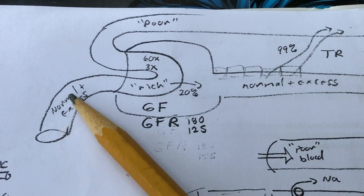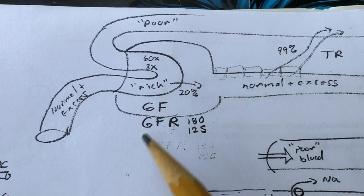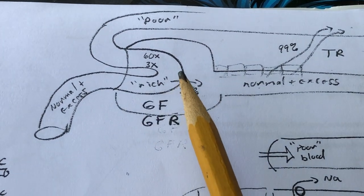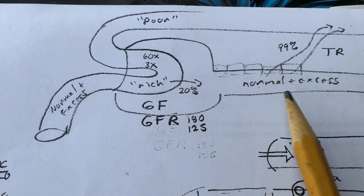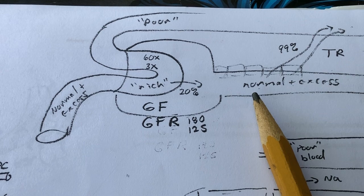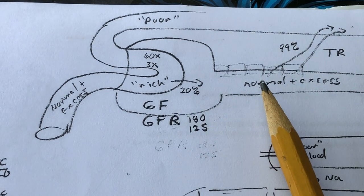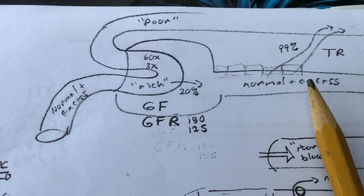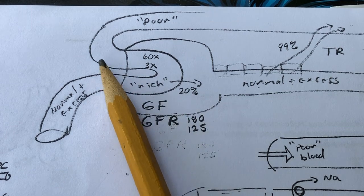The blood that passed through the glomerulus lost plasma to this filtrate space, and that filtrate represents the normal concentration of materials in the plasma plus the excess. Now the blood coming out in the efferent arteriole is basically poor in the sense that it just lost a lot of things—good and bad things.